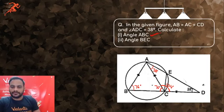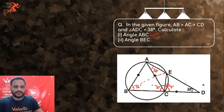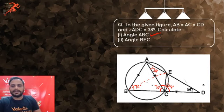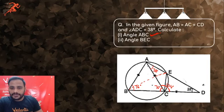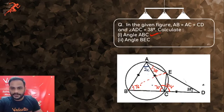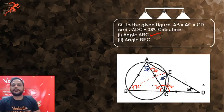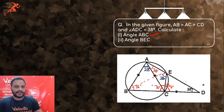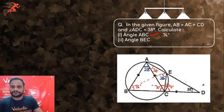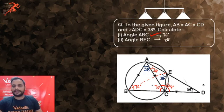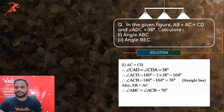For angle BEC: since both base angles are 76°, their sum is 152°. So the angle at the apex = 180 - 152 = 28°. Since BC is a chord, angles in the same segment are equal, so angle BEC is also 28°. Final answers: angle ABC = 76° and angle BEC = 28°.